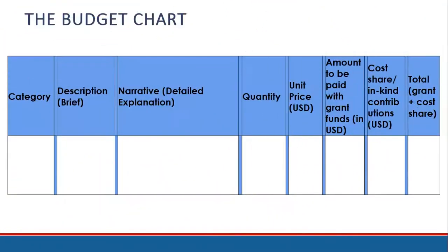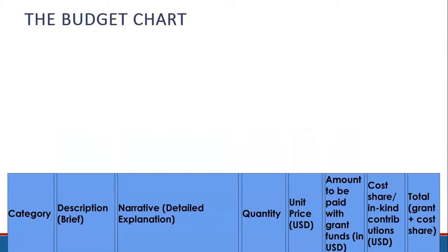As part of the application process, you will complete a chart with one line for every project expense. While all grant budget charts look a little different or use different terms, the information collected is generally the same. Let's look at the components of the budget chart.